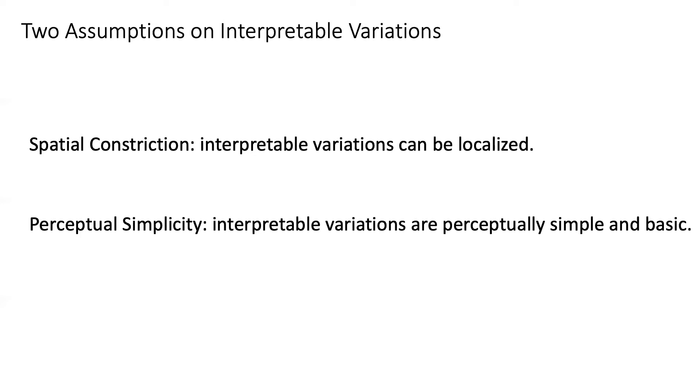The first one is called spatial constriction, assuming that interpretable variations should be localized in an image. The second one is called perceptual simplicity, assuming that interpretable variations should be perceptually simple and basic.